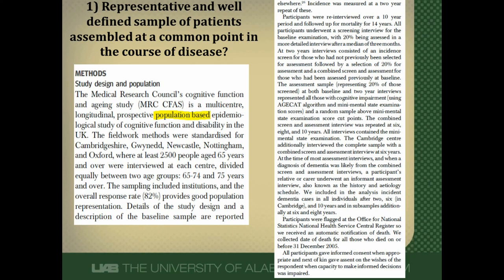This study was a population-based study, meaning it took a broad group of people from the whole population — not one small referral center. They included older patients with dementia, and also included people from institutions because people in nursing homes also develop dementia. To see the broad outcomes of people with dementia, they included people from both the community and institutions. Follow-up started when patients developed dementia — this is what 'incident' means, new onset. So I think this meets the definition of a representative sample assembled at a common point in the course of disease.